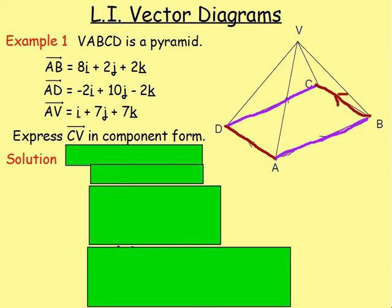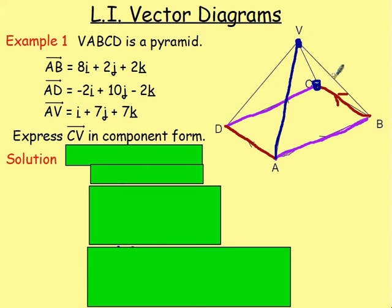This vector going from A to D — anything that length in that direction will also be the same as AD. So going from B to C is also the same as AD, it's the same length and direction. This vector going from A to V, going from A up to the point on the pyramid — there's nothing that is in that direction. These points going from D to V and B to V may be the same length, but they are definitely not the same direction. So we can really only use these known vectors.